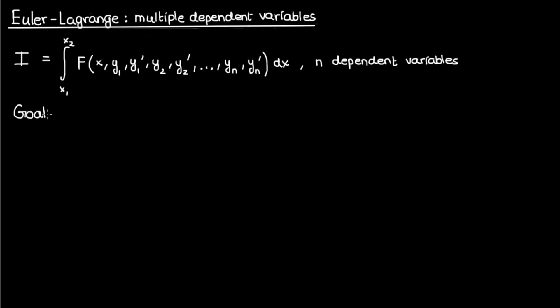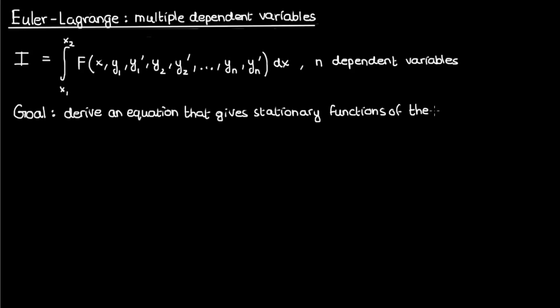My goal here is to derive an equation that gives the stationary functions — the stationary y's — of the functional I. In other words, I'd like to derive the Euler-Lagrange equation for multiple dependent variables. The procedure for this is very similar to the procedure used when deriving the original Euler-Lagrange equation in a previous video, links in the description.